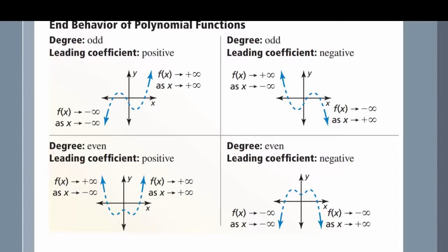If our leading coefficient is negative and our exponent is even, then as x approaches negative infinity, f of x approaches negative infinity, and as x approaches positive infinity, f of x approaches negative infinity.